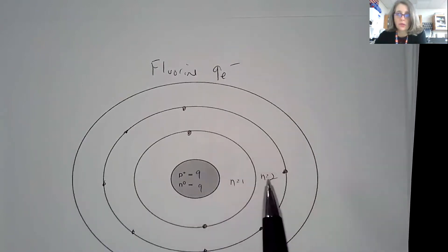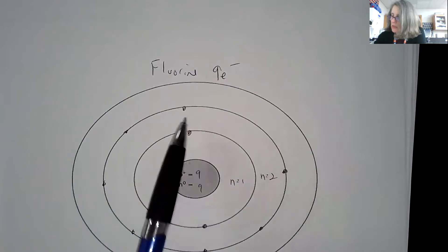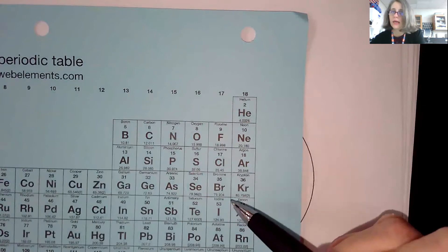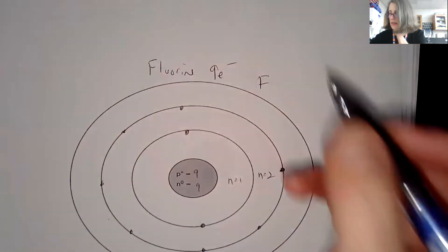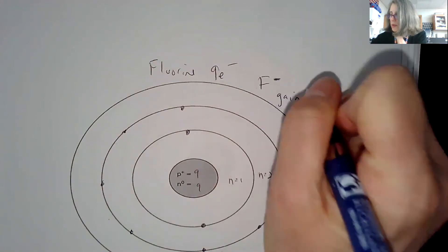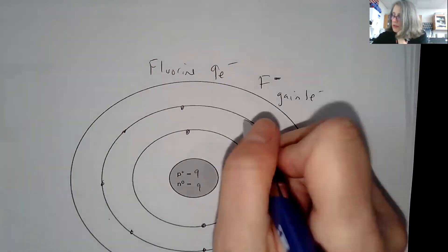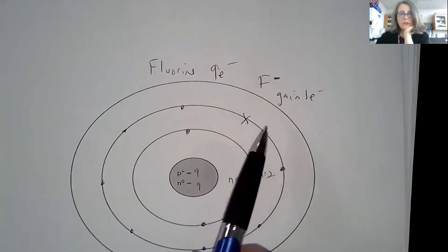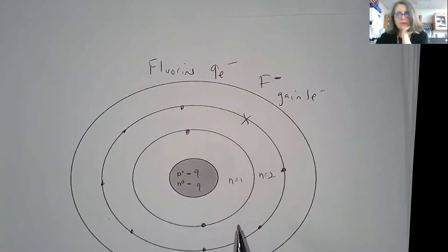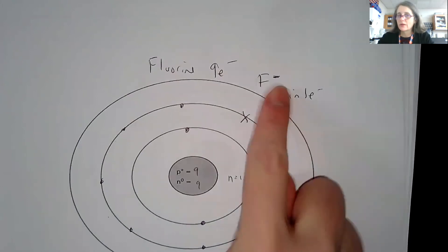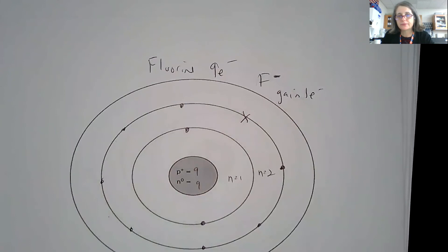The second energy level can hold a total of eight electrons. So what does fluorine like to do when it becomes an ion? Fluorine is a halogen, and this column typically has a negative one charge — it gains one electron. That electron goes into the second energy level to fill it up to eight. This shows us with the Bohr model exactly how many electrons can go into each energy level and where the charge on the ion comes from.